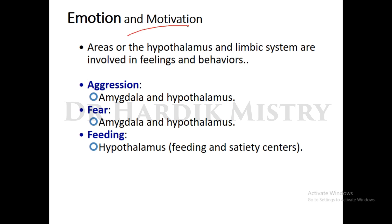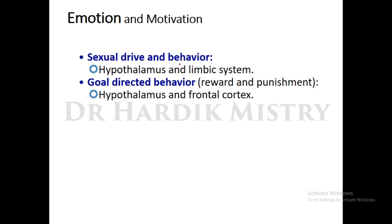The hypothalamus and limbic system are involved in feelings and behaviors related to emotion and motivation. Aggression and fear are controlled by the amygdala and hypothalamus. Feeding behavior is controlled by the hypothalamus, which contains feeding and satiety centers. Sexual drive and behavior are controlled by the hypothalamus and limbic system. Goal-directed behavior and reward/punishment centers are controlled by the hypothalamus and frontal cortex.